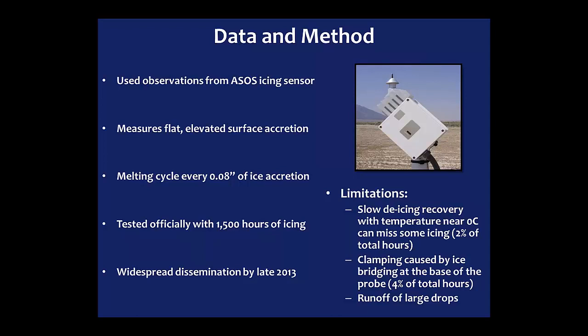Every eight-hundredths of ice that accretes on the sensor, it goes through a melting cycle to de-shed the ice and repeat the process. When tested officially with 1,500 hours of icing, they were out in the field taking measurements and comparing them to the sensor. One limitation is that during de-icing recovery, if temperatures are near freezing, the time to allow the sensor to cool and rebuild ice can cause some loss of actual accretion — but that only accounted for 2% of the total 1,500 test hours.